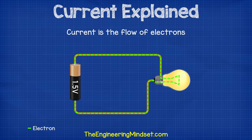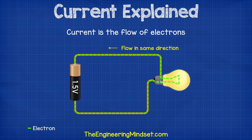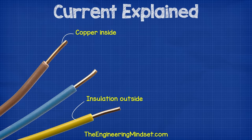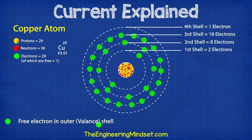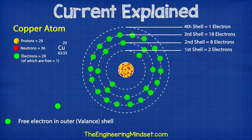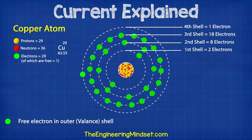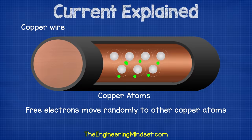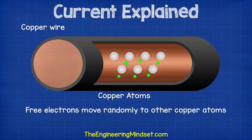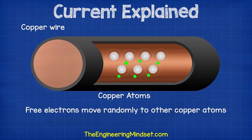Current is the flow of electrons in a circuit. To use electricity, we need electrons to flow in the same direction around a circuit. We usually use copper cables to form the circuit because the atoms that make copper have a loosely bound electron in the outermost or valence shell, which is free to move around inside the metal. This free electron is very easy to move, which is why copper is so popular. It's so easy to move that it will naturally just move to other copper atoms by itself, but this occurs randomly in any and all directions, which isn't useful for us.